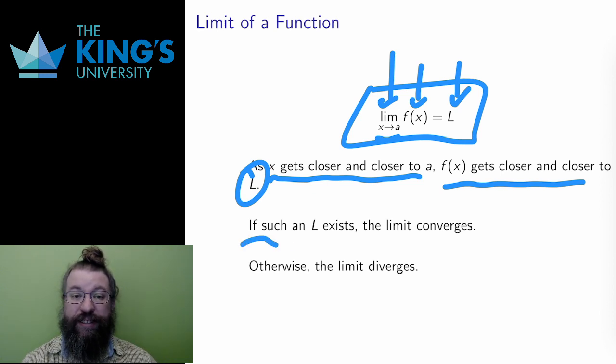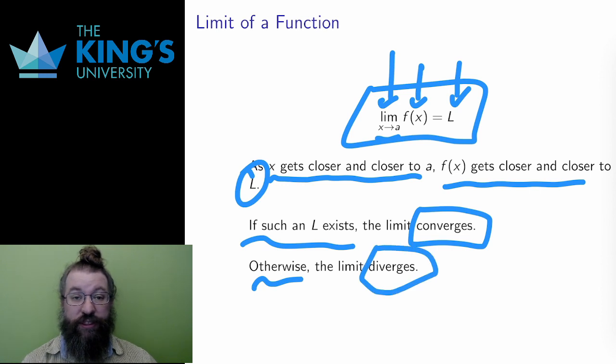If such a number L exists, then I say that the limit converges. I also sometimes say that the limit exists, simply. If such a number doesn't exist, I say the limit diverges, or again simply, that the limit doesn't exist.